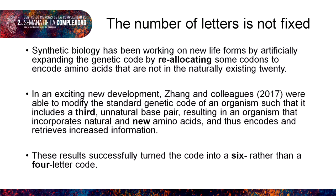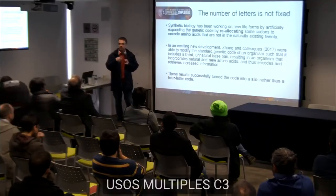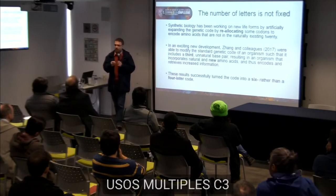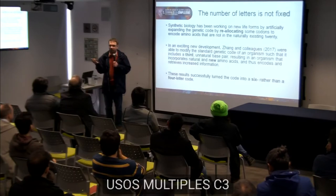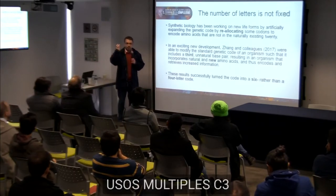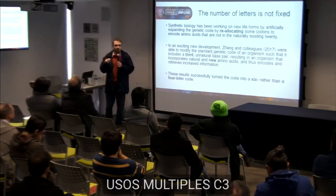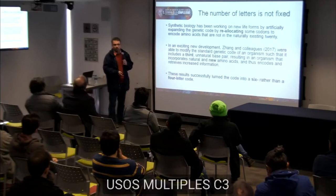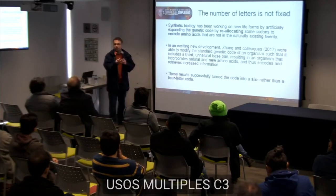Recent advances in synthetic biology have demonstrated that changing the number of letters in the code is actually not a problem — it's possible to do in the lab. Zhang and colleagues showed they were able to add a third base pair to the genetic code, thereby increasing its informational capacity to specify even more amino acids, and integrate it into RNA translation to create new proteins. The big advantage is that all previously coded gene sequences remain intact. There is no cost to this increased informational capacity — you're just adding extra codons while previously coded codons all stay intact. A six-letter genetic code can subsume the previous four-letter code without any problem.